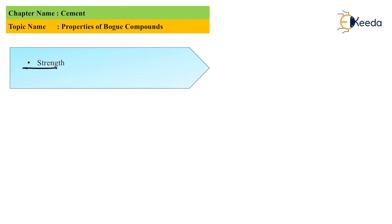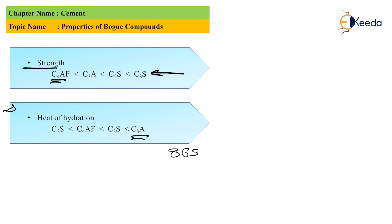So when we talk about strength, the poorest is C4AF and highest cementing value is C3S. When we talk about heat of hydration, the highest heat of hydration is C3A, that's 865. C2S is least, that's 260. C4AF is 420, and C3S is 500, all values in joules per gram.